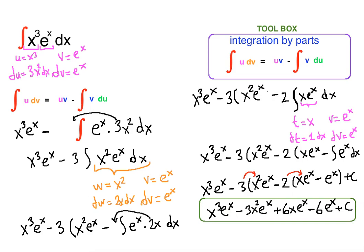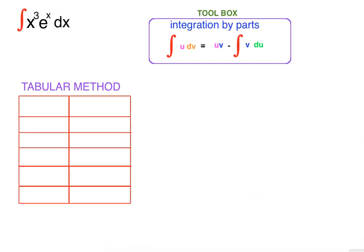Now let's solve the same problem using the tabular method. In tabular method, we define u and dv first. Our u is x cubed and our dv is e to the x. We are going to differentiate the u column and integrate the dv column.